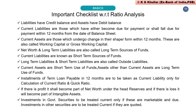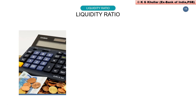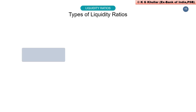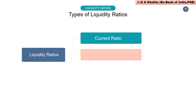With basics cleared, let's start with the first category — liquidity ratios. This ratio measures the ability of the firm to meet its short-term obligations, that is, the capacity of the firm to pay its current liabilities as and when they are due. These ratios reflect the short-term financial solvency of a firm. A firm should ensure it does not suffer from lack of liquidity at any point. Failure to meet obligations on time may result in bad credit image, loss of creditor confidence, and even legal proceedings against the firm. There are mainly three types of liquidity ratios: current ratio, acid test ratio or quick ratio, and absolute liquid ratio or cash ratio.